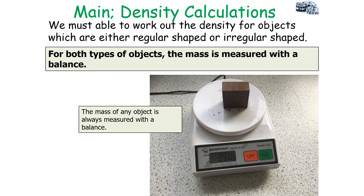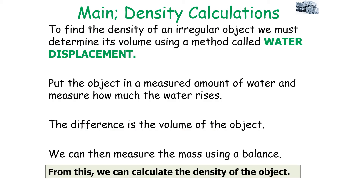To work out the density of an irregular shaped object, start by measuring the mass with a balance. To find its volume, use a method called water displacement: place the object into a measured amount of liquid, such as water, and measure how much the water level rises. The rise in the water level gives the volume of the object, which can then be used with the mass to calculate density.